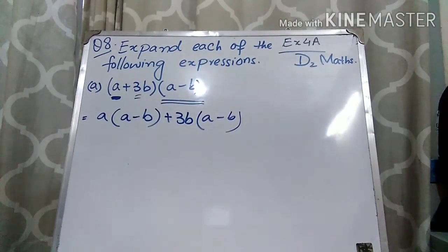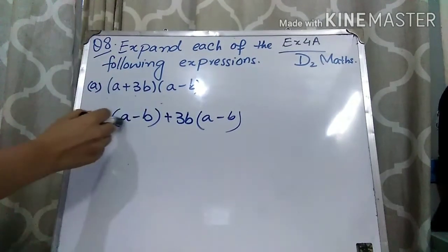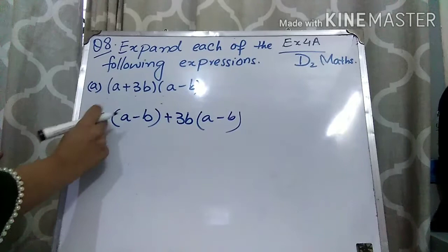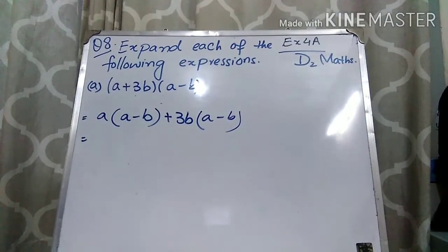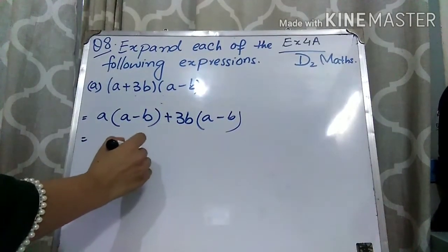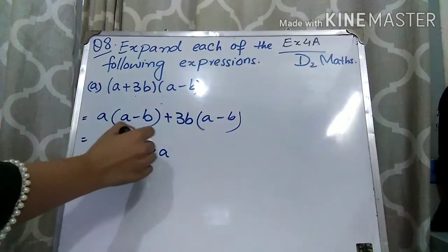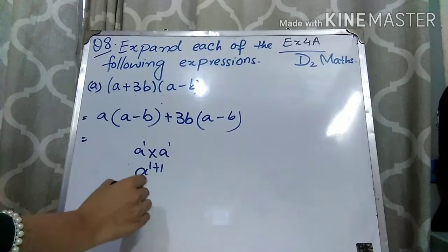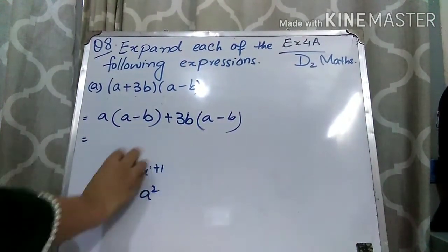Now multiply them. Multiply A with this bracket — first we will multiply A with A, and then with B. When you multiply A with A, as you know, when you do the multiplication of the same variables, their powers will add. Here the power is 1 and here the power is also 1. So when you add 1 and 1 you will get 2, so you will get A².